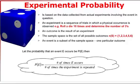Alright, so the second type of probability that we're going to look at is experimental probability. This is based on data collected from actual experiments involving the event in question.